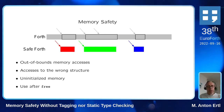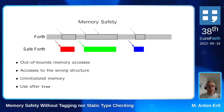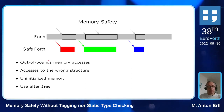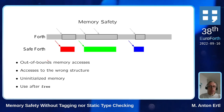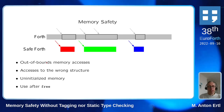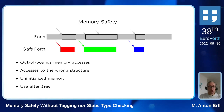We have access operators that are typically bounds-checked, which prevents a number of errors. Here are the kinds of errors we don't want: we don't want out-of-bounds memory access — going beyond the bounds of an object.